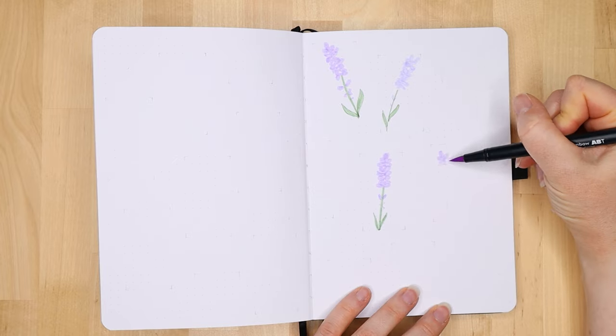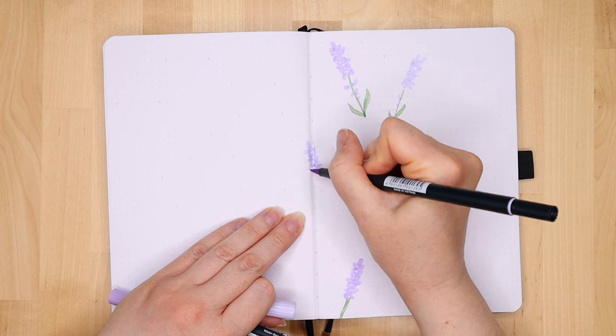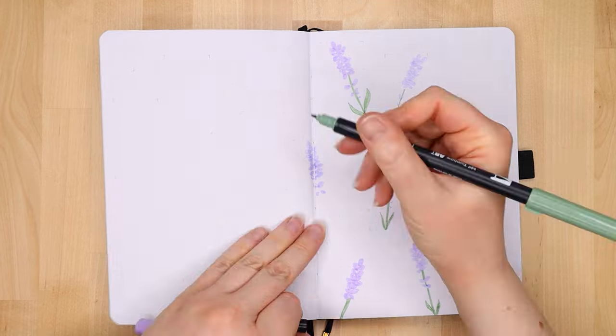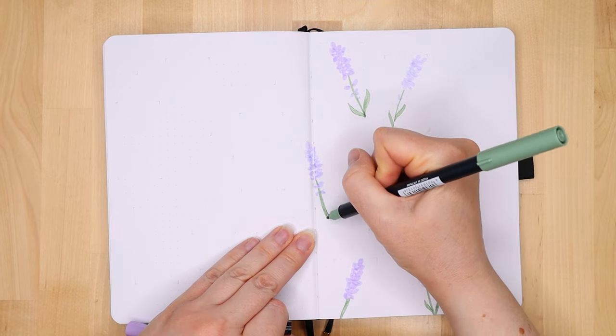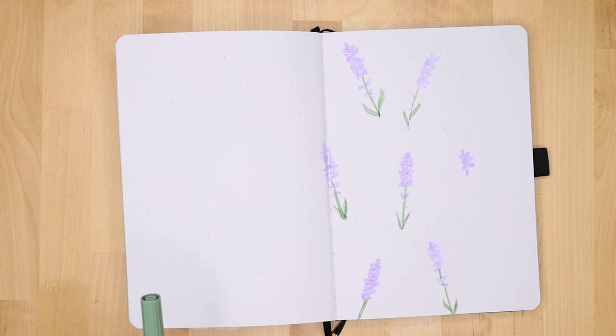So this is me drawing out all of the lavender. I picked two different shades of lilac in my Tombow set and then my favourite shade of green to do the stalks. I'm building up the pattern across two pages.